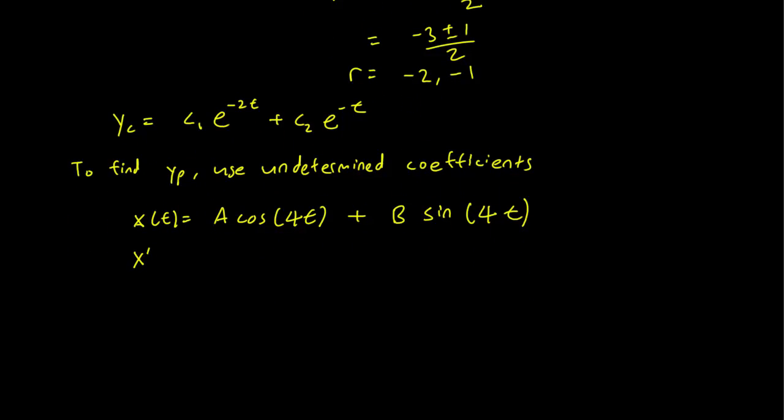We take the first derivative to get -4A*sin(4t) + 4B*cos(4t). And we take the second derivative, and what we get is -16A*cos(4t) - 16B*sin(4t).